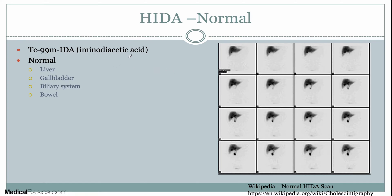So what is a HIDA scan? A HIDA scan is a type of nuclear medicine study where we're giving some type of radiopharmaceutical, and that radiopharmaceutical has some affinity for certain organs. In this situation, it has an affinity to the gallbladder and the biliary system. So in a normal situation, you're going to see the liver uptake, the gallbladder uptake, and uptake of the biliary system — both the extrahepatic and intrahepatic — and also small bowel. This situation is a little bit early, so we didn't see small bowel, but usually you will.